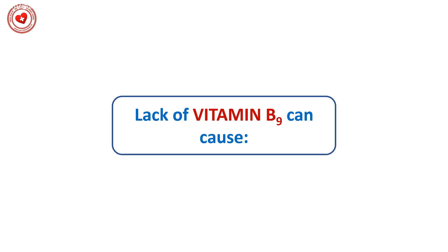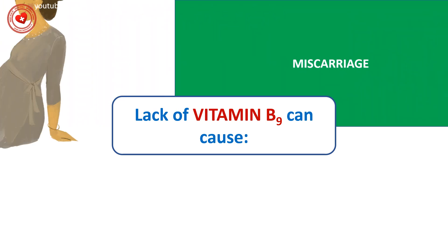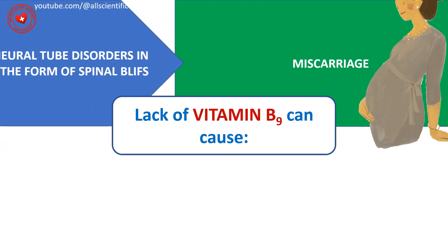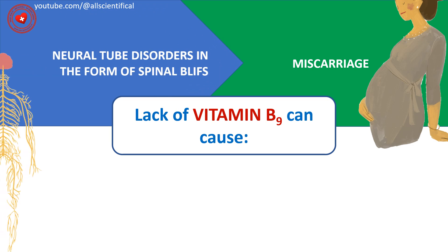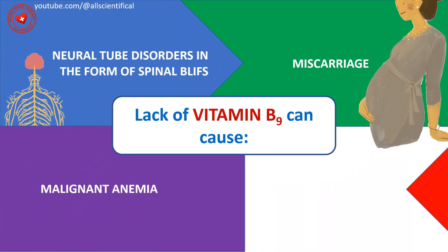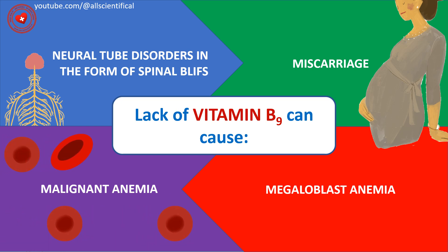A lack of vitamin B9 can cause neural tube disorders in the form of spina bifida, miscarriage, megaloblastic anemia, and pernicious anemia.